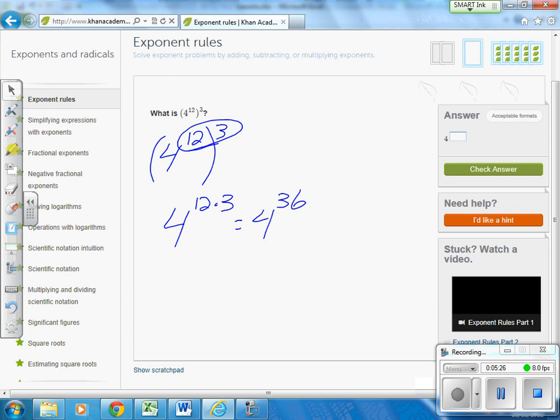Your three scenarios, remember, are: one, 2 to the 3rd times 2 to the 2nd, we add the exponents. Your other scenario is where we have 3 to the 2nd divided by 3 to the 3rd.